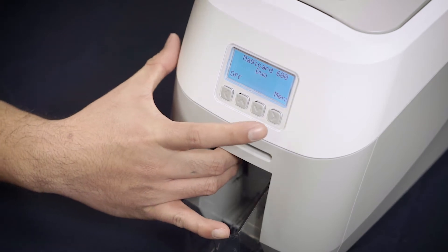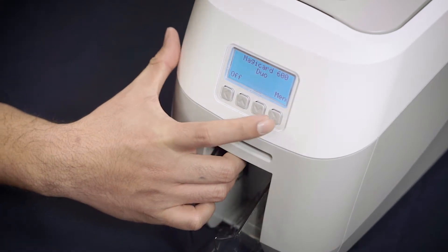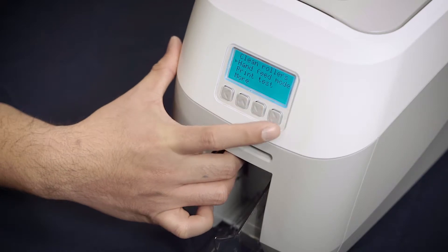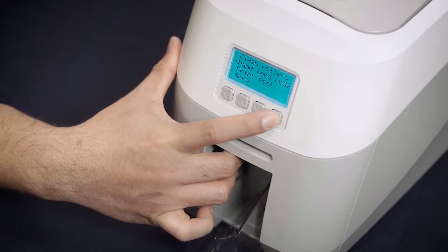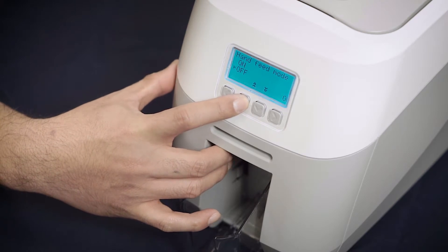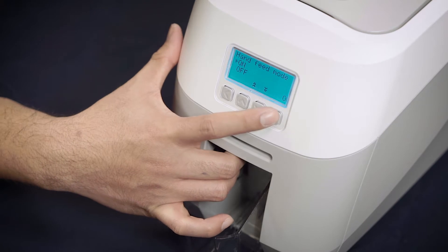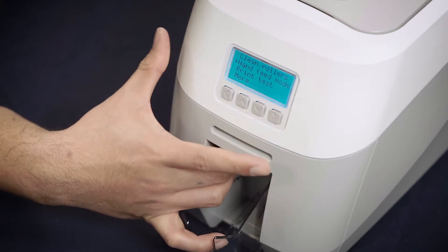With your display showing the home screen, press the menu button on the right hand side. Scroll down to the second option, hand feed, and select by clicking the right hand button. If the hand feed mode is set to off, scroll upwards so the arrow is pointing at on, and click OK.